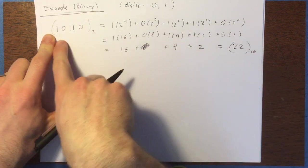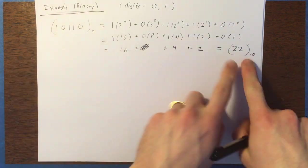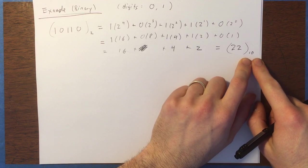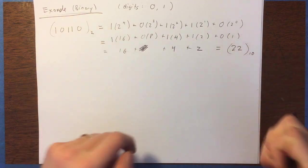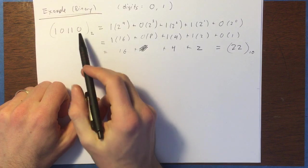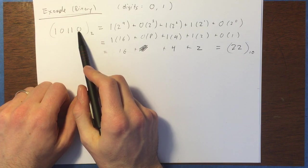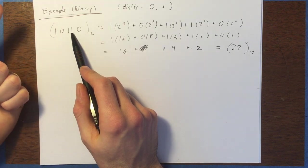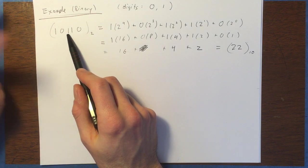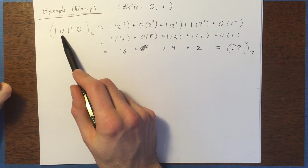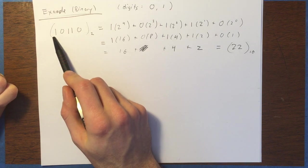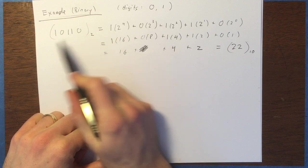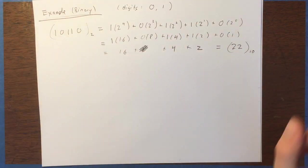So that's an example of how you can take a number in binary and reinterpret it in base 10. You don't have to go through all this work necessarily. If you understand what's going on, you can just look at this and say: 0 in the 1s place, 1 in the 2s place so that's plus 2, then 1 in the 4s place so add 4 — now I'm up to 6. 0 in the 8s place and 1 in the 16s place, so I add 16 to 6 and I get 22 as my answer. You can kind of do that in your head if you're comfortable with interpreting it.